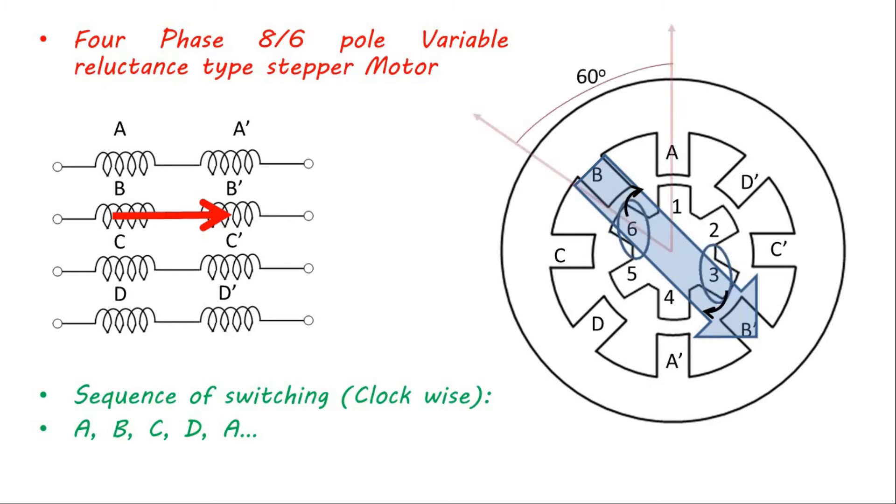Hence, the rotor poles closest to this B phase pole will align along this mmf. As shown in figure, rotor pole 6 and 3 will align to B phase.